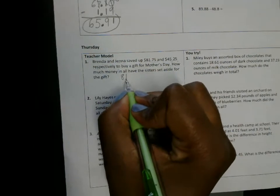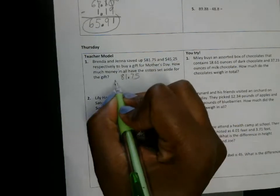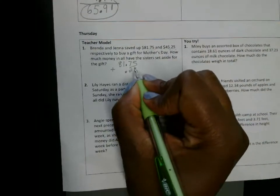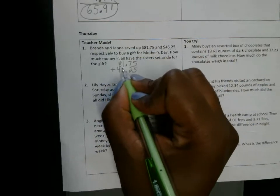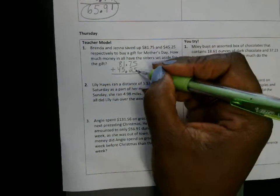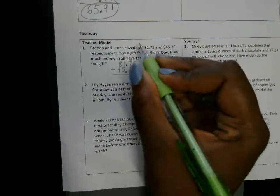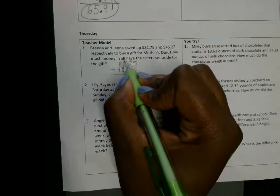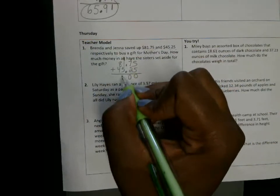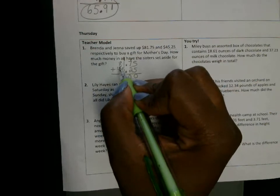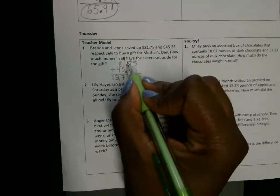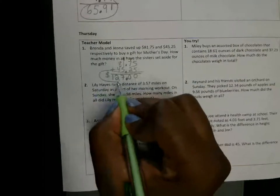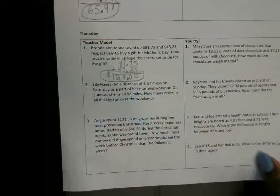How much money in all have the sisters set aside? So you're going to add the amounts together. So these are decimals. In order to add these amounts, you line up by the decimal. So let's add five and five, that's ten. This is seven, eight, nine, ten. Carry one there. This is five, six, seven. This is eight, nine, ten, eleven, twelve. The last step is to bring down the decimal. So they saved one hundred twenty seven dollars.